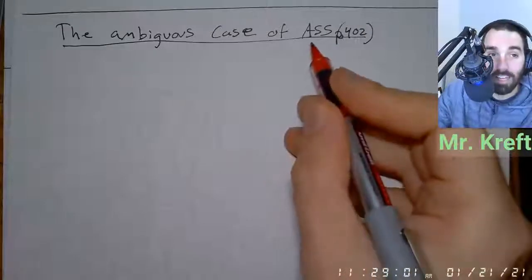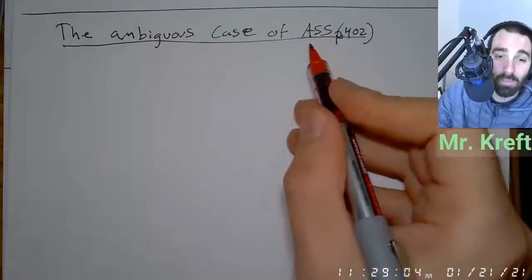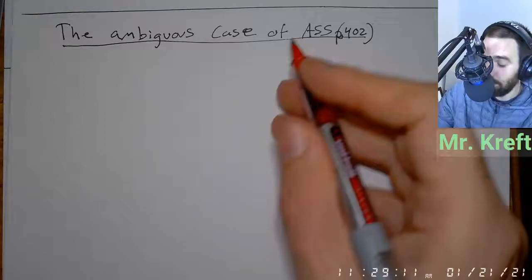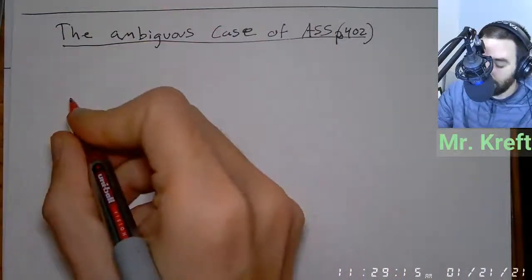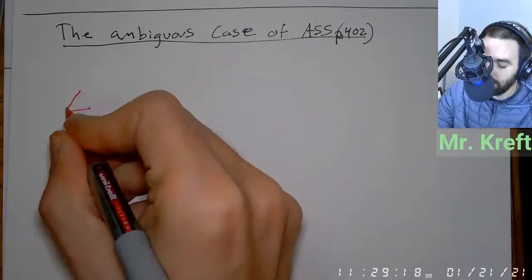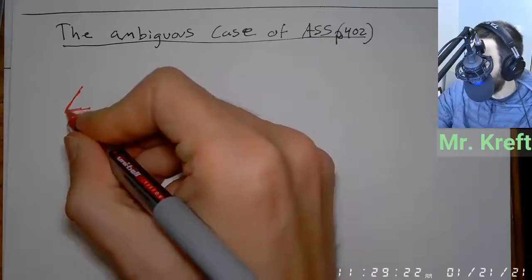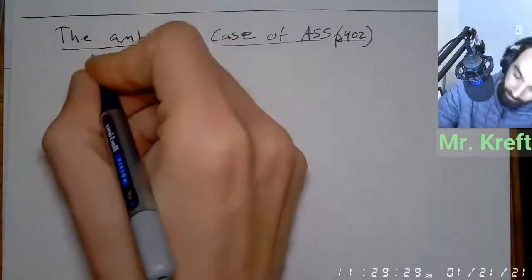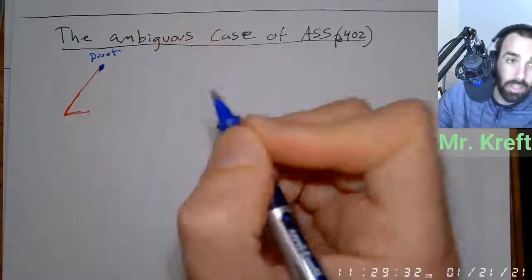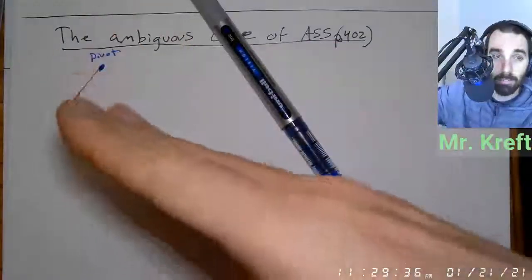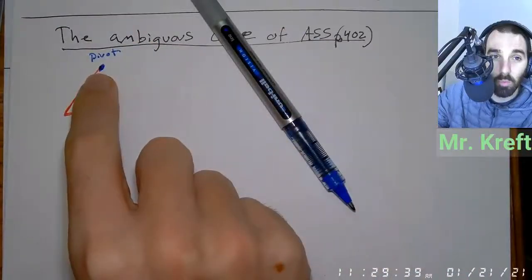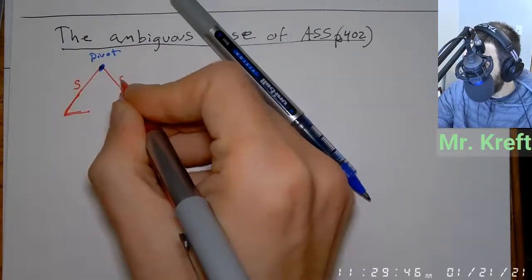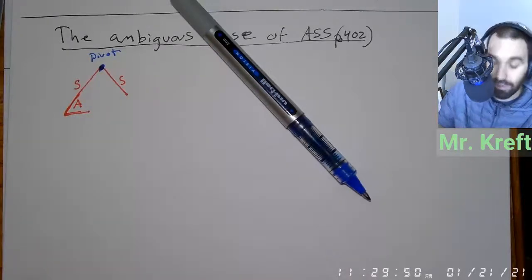It's all about the height. Remember, it's angle, side, side. You might be like, why don't we just call it SSA? I do this for a purpose because we want to start with the angle. So I'm going to draw the three parts: I have an angle, I have a side, and then there's a pivot point. The pivot point is where rotation happens. Then I have another side. I have a side, a side, and an angle. This is ASS.